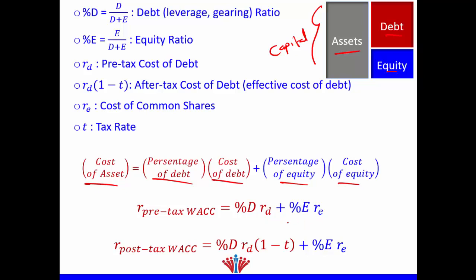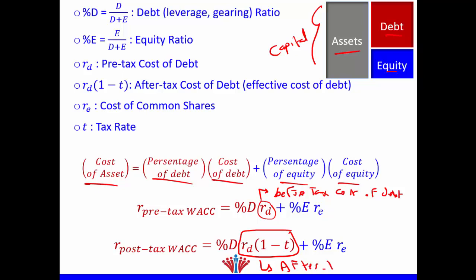We know that every time we use debt, we pay lower taxes, which we call the tax shield. Therefore, this cost of debt is called the before-tax or pre-tax cost of debt. I need to multiply my cost of debt by one minus T, and this is called the after-tax cost of debt. Therefore, we calculate our after-tax WACC as: percentage of debt multiplied by cost of debt multiplied by (1 − T) — the whole item is called after-tax cost of debt — plus percentage of equity times cost of equity.